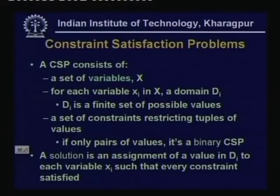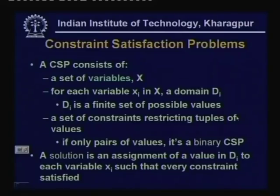To summarize, a CSP consists of a set of variables X = {x1, x2, ..., xn}. Each variable xi has a domain Di, a finite set of possible values. We have a set of constraints restricting the tuples of values. A solution is an assignment of a value from Di to each variable xi such that every constraint is satisfied.